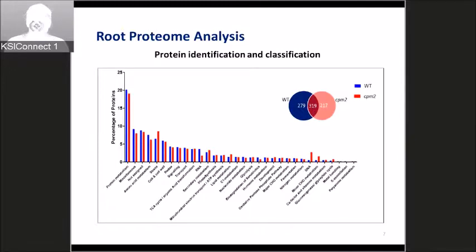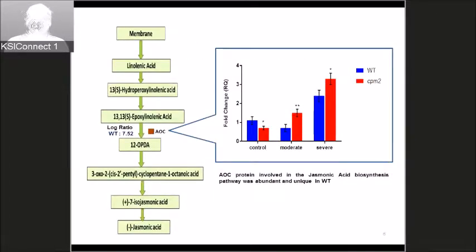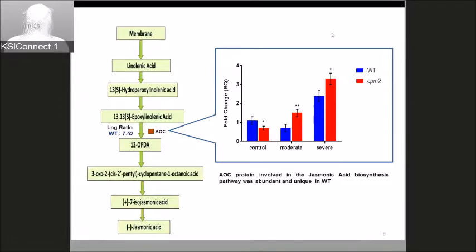One of the most astonishing results from the proteomics analysis was that the AOC protein was highly abundant in the wild type — the stress-to-control log ratio was very high, between 5.2 and 7.5. We also performed qRT-PCR analysis, and under control conditions the transcripts were lower in CPM2 compared to the wild type; however, this trend reversed under drought.